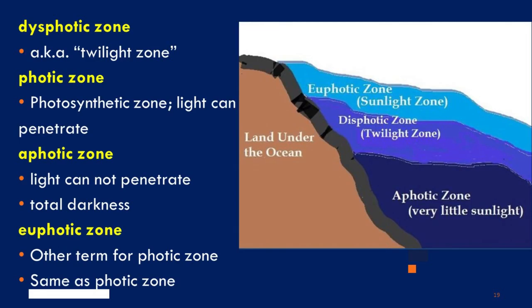The Dysphotic Zone is found just below the photic zone and is also known as the twilight layer. In this zone, only a small amount of light penetrates the water, and plants do not grow here due to the insufficient amount of light. The photic zone is the photosynthetic zone wherein light can penetrate — this is where phytoplankton and other photoautotrophs are found. In the aphotic zone, light cannot penetrate, and it is characterized by total darkness. Euphotic Zone is another term for the photic zone, where light can penetrate and be used for photosynthesis.